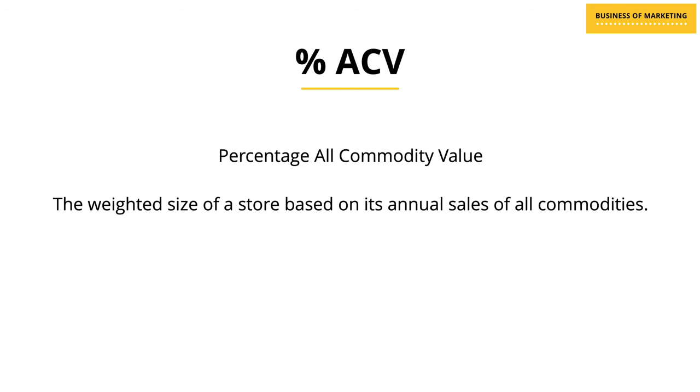Because ACV tells you the total sales of a store, if you knew the ACV of all stores in a particular region, you could identify which are the most important stores and which are least important. That brings us to the next measure: percentage ACV, also called percentage ACV distribution or percentage ACV weighted distribution. For simplicity, I'll refer to it as percentage ACV. It is the weighted size of a store based on its annual sales for all commodities.